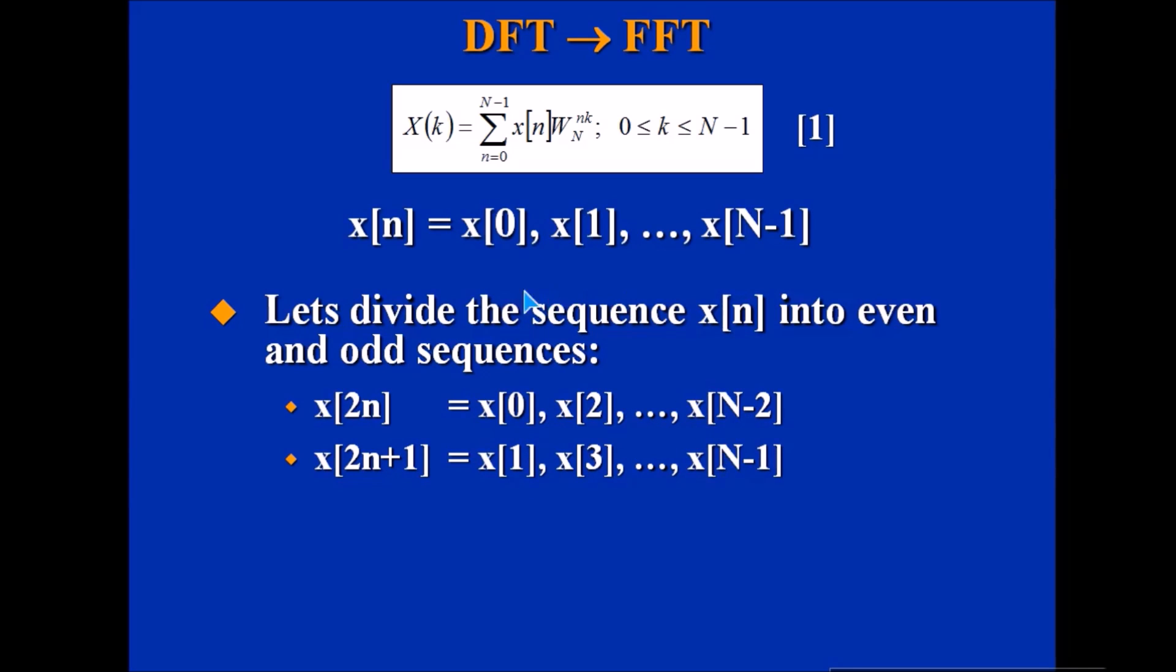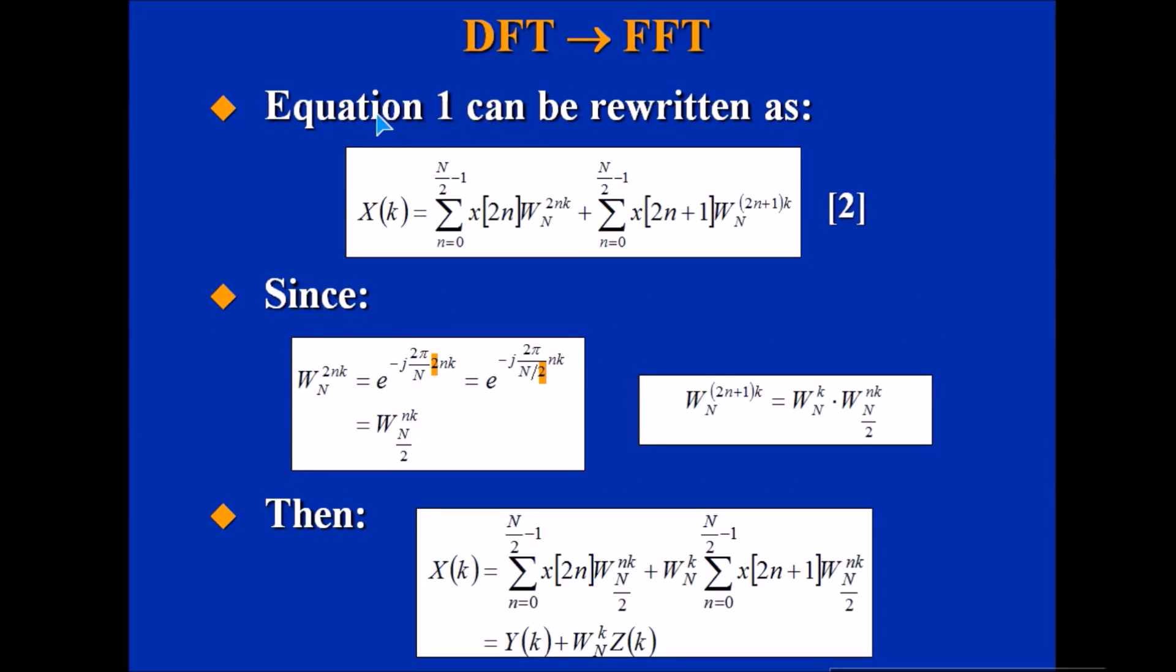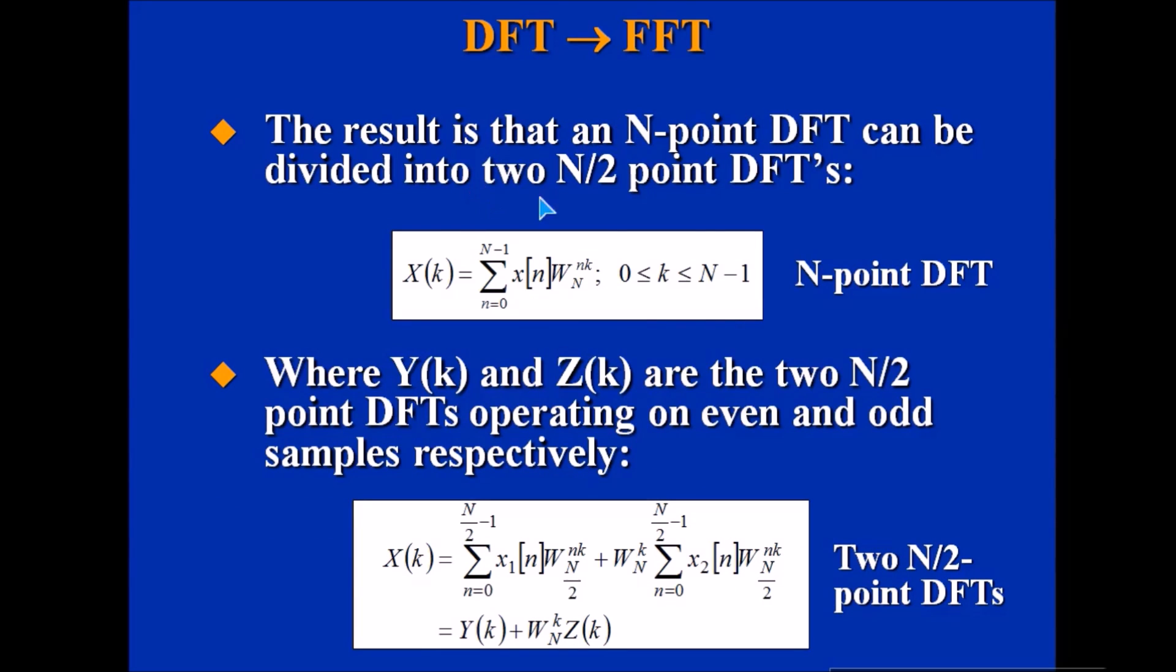These are the even and odd sequences, and the equation can be rewritten like this with the twiddle factor for even and odd. We have Y(k) representing this and Z(k) representing that. The result is that an N-point DFT can be divided into two N/2 point DFTs. Y(k) and Z(k) are the two N/2 point DFTs operating on even and odd samples respectively.